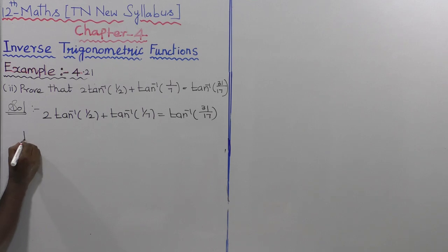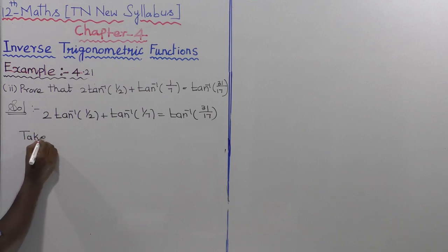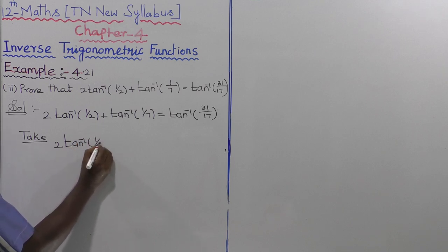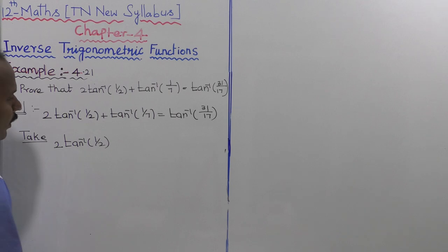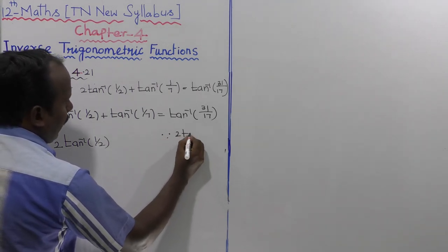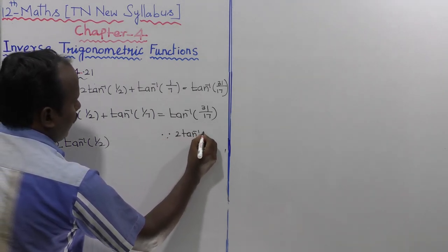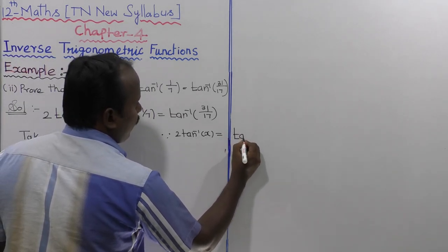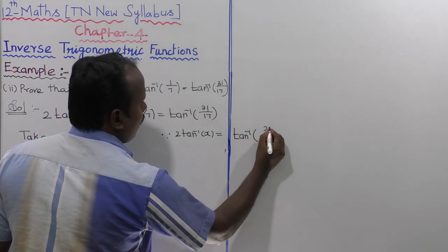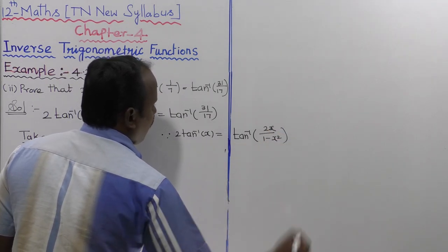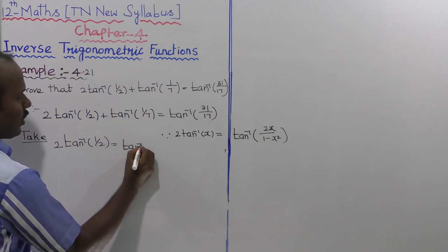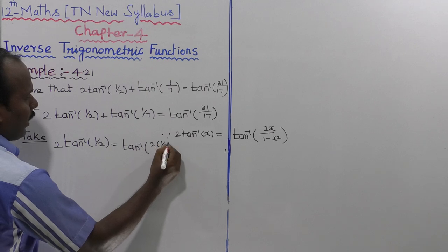Now let us take the first term only: 2·tan⁻¹(1/2). The formula for 2·tan⁻¹(x) is tan⁻¹(2x / (1 − x²)). So that is equal to tan⁻¹ of 2 times (1/2), the whole divided by 1 minus (1/2) squared.